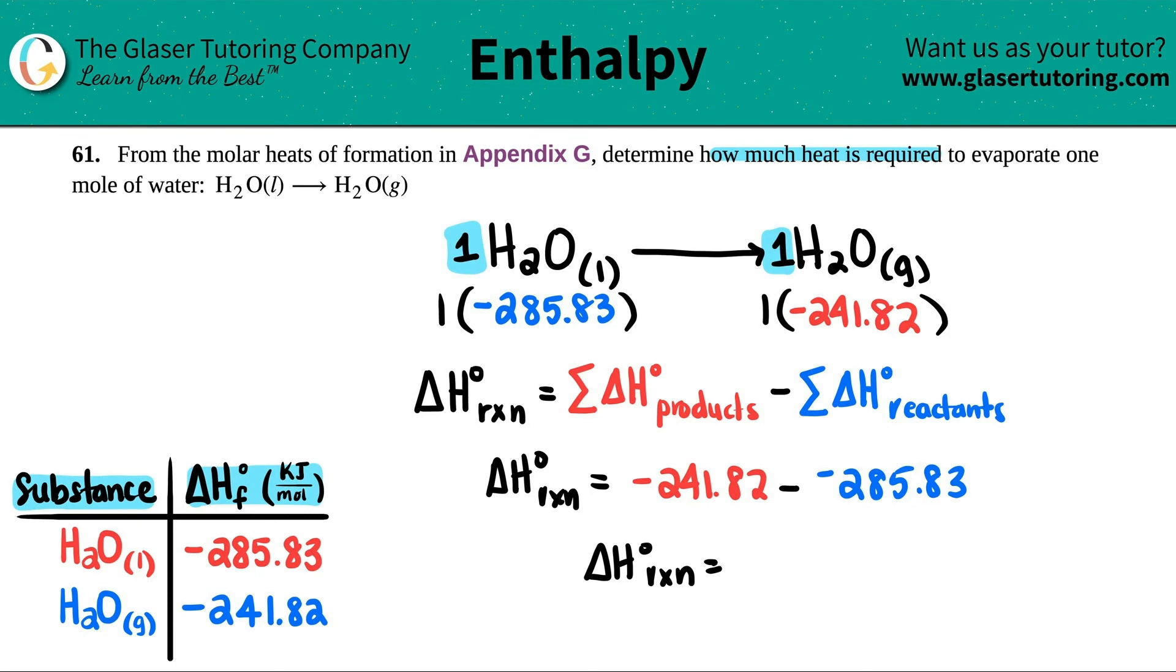285.83. Sometimes the calc gets me. Okay, there we go. Now I have 44.01 and that's kilojoules per mole, because your delta H values standard are always going to be in kilojoules per mole.